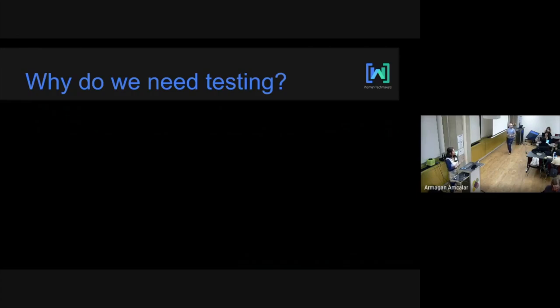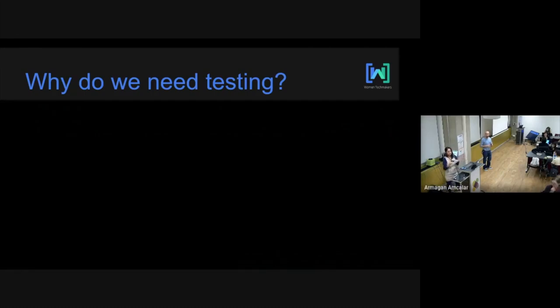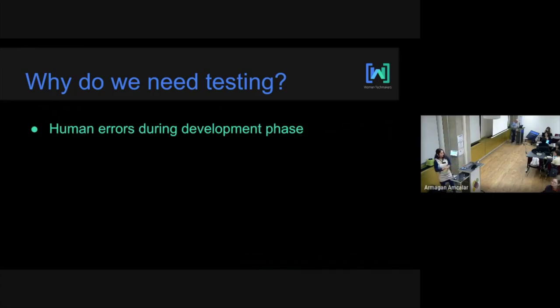Testing isn't just for developers. A PM, a QA engineer, or even someone from a marketing team checking if the product works as it should — these are all part of testing. I've summed it up in four different categories so our brains can work better with them. We can start with human errors during the development phase. As I mentioned, when you were writing your code, you may have made a mistake — we're all human, so it's completely normal.